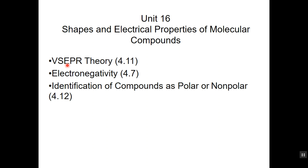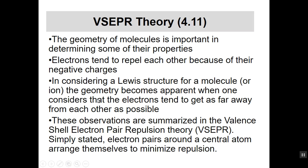There are pretty much three key topics here. One is VSEPR theory, which stands for valence shell electron pair repulsion theory. We'll talk about electronegativity — atoms don't pull electrons with the same ability. And we're going to look at how we identify compounds as being polar or nonpolar. Sections 14, 15, and 16 cover a lot of stuff, so don't get discouraged. Just take your time, go back and look at them again.